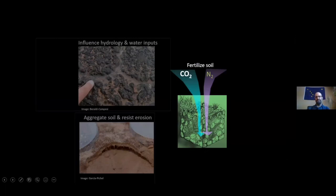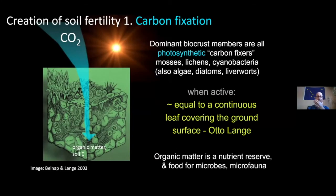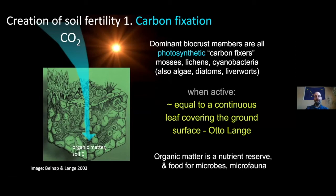Next, I'd like to touch on how bio crusts build and maintain soil fertility. They do this by multiple mechanisms. The first one we've already heard about — carbon fixation. The dominant bio crust members — mosses, lichens, cyanobacteria — all the main ones are photosynthetic carbon fixers. That means they are able to draw down CO₂ out of the atmosphere and convert it into their bodies. Over the course of time, this leads to the buildup and deposition of organic matter and carbon in the soil.